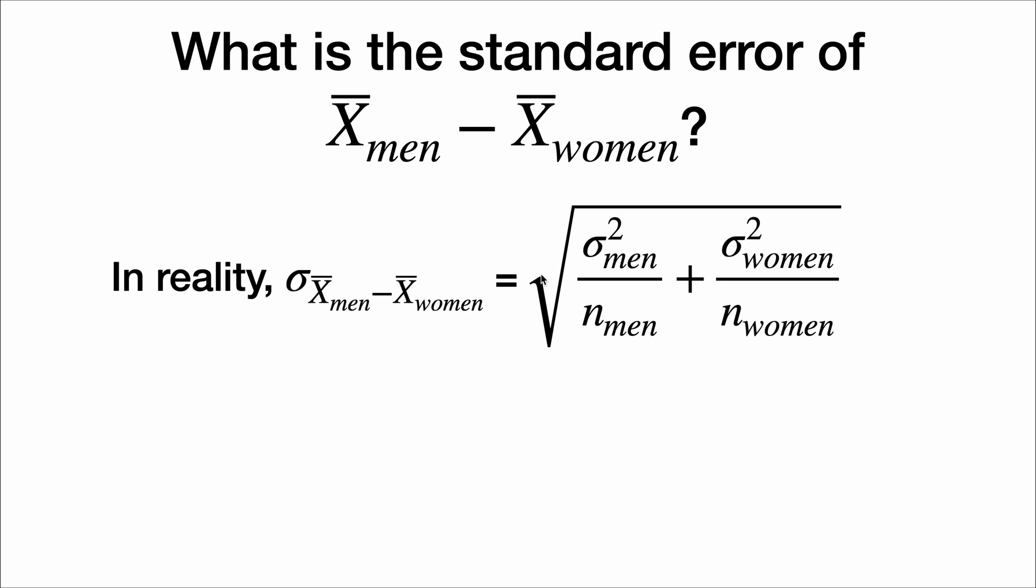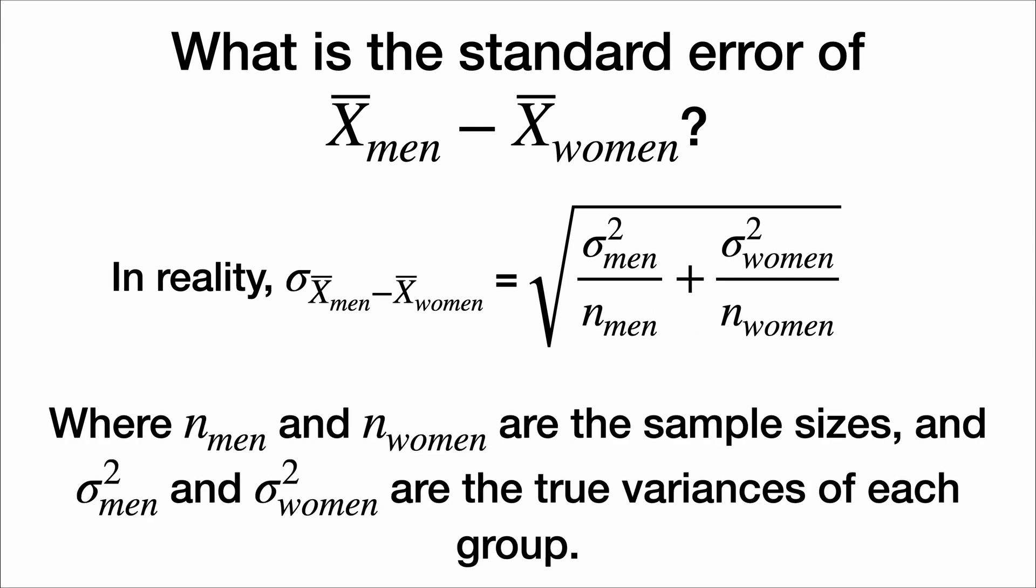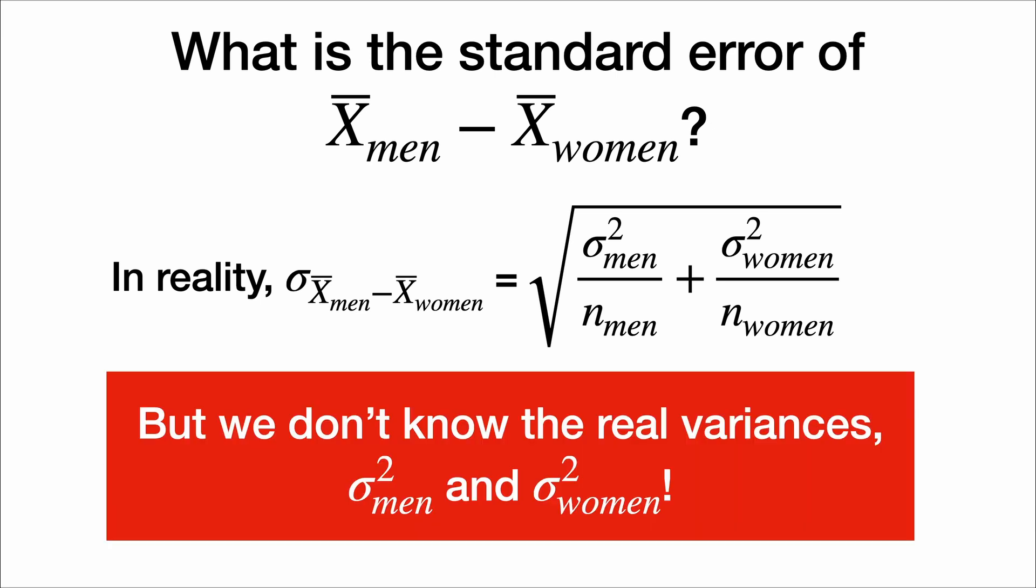Well, in reality, this is the standard error. It involves the true variances of both groups and their sample sizes. So n men and n women are the sample sizes, and sigma squared men and sigma squared women are the true variances of each group. But we don't know the real variances. We don't even know the means. That's what we're trying to figure out. So how could we know the variances?